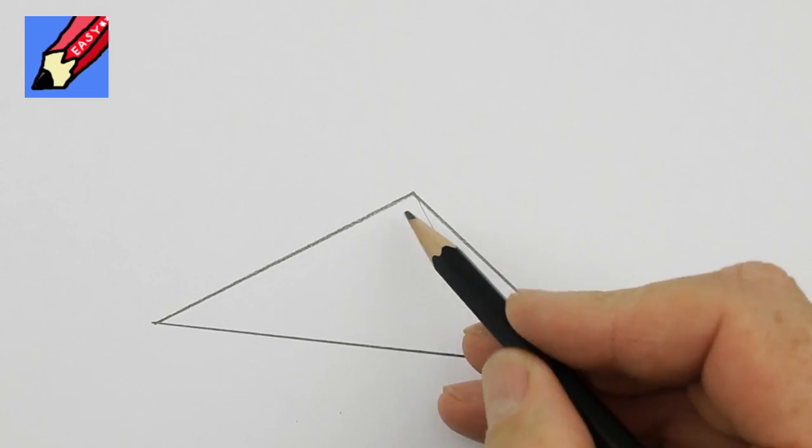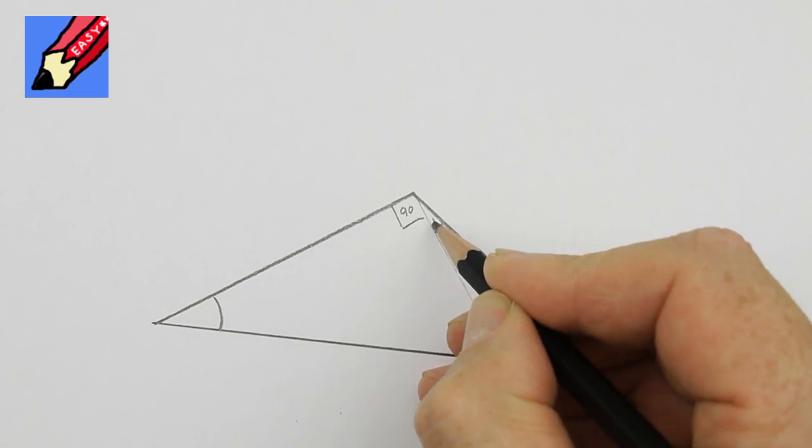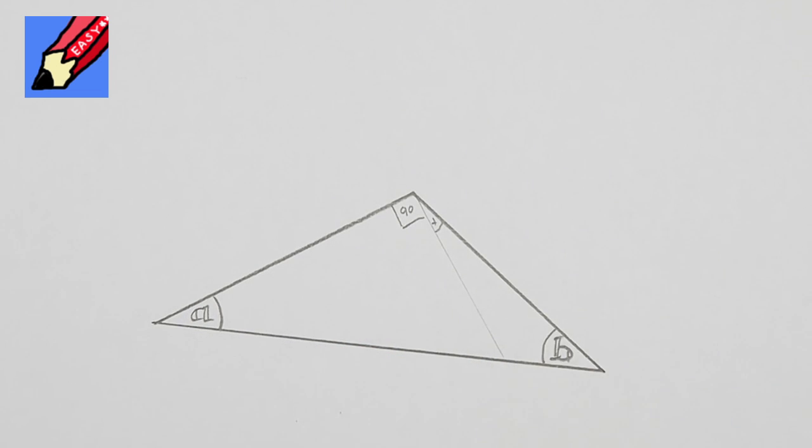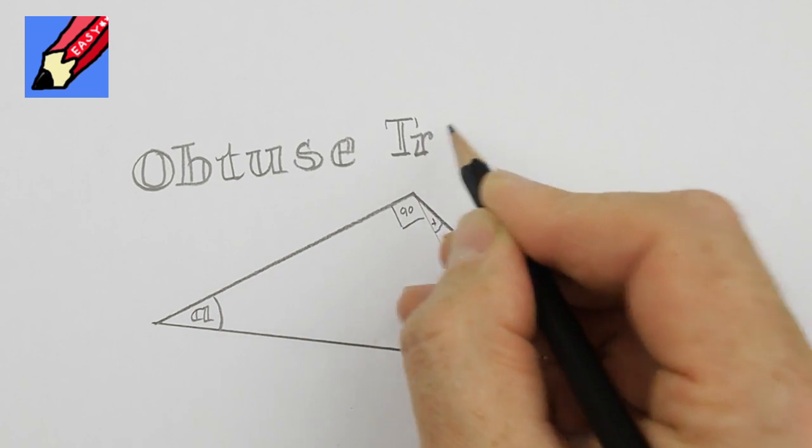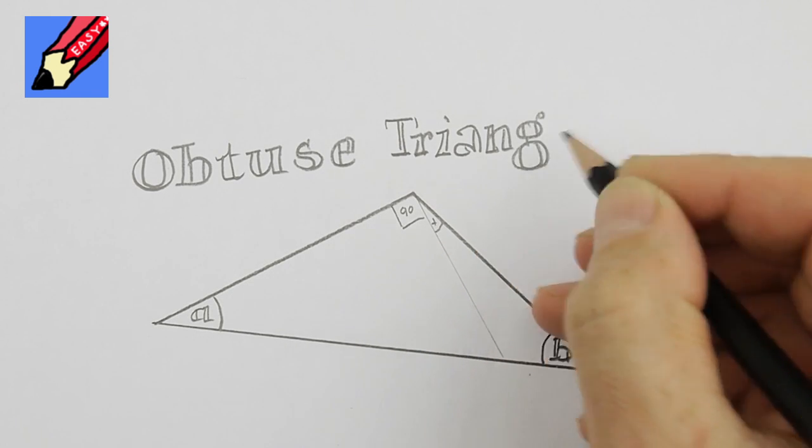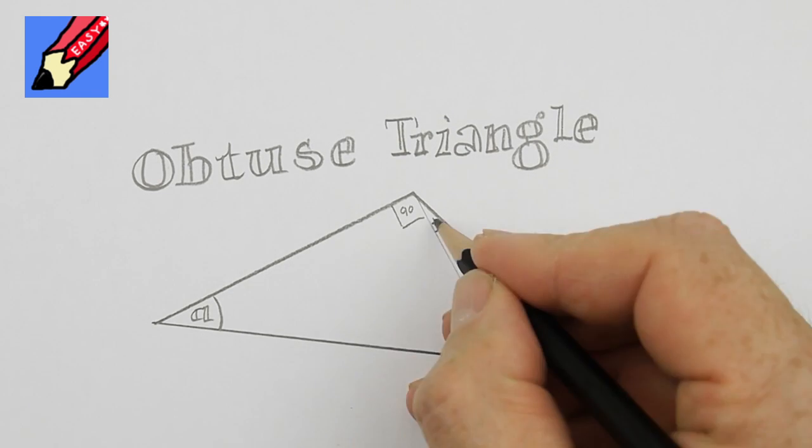And finally, Euclid said firmly, a triangle with one obtuse angle, or if that is to say an angle that is greater than 90 degrees, is called an obtuse angle. Euclid's friends cheered.